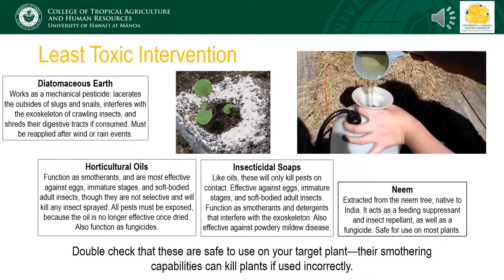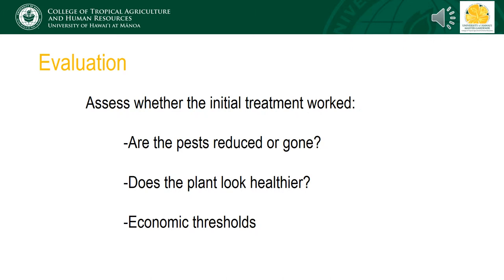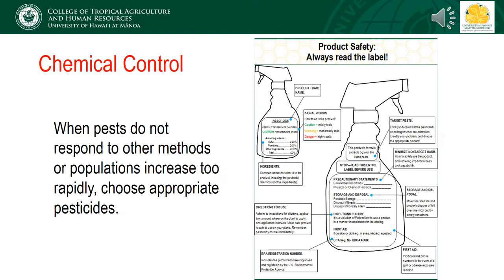Also, make sure these products are safe to use on your particular plant, as the smothering capabilities may kill plants when applied incorrectly. After using a least toxic intervention, evaluate to see how effective it was. Are the pests reduced or gone? Does the plant look healthier? Are pest insect populations below economic thresholds? Just because pest insects are present on a plant does not mean you need to treat them. It is only when populations get great enough that they overwhelm the plant's immune system. So as long as you've knocked them below that threshold, you don't need to pursue another treatment and can go back to preventative practices and monitoring.